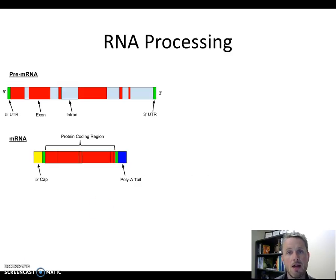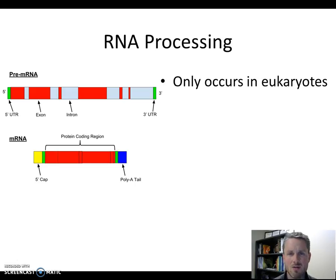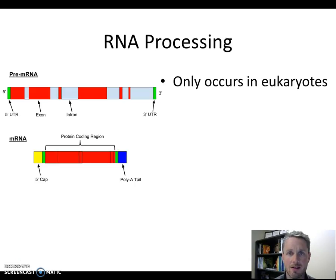RNA processing is a step that is performed on the RNA, and this process only occurs in eukaryotes. Prokaryotic organisms do not perform RNA processing. This is a complication in eukaryotic organisms, and it's another way that eukaryotes are more complicated than prokaryotes.